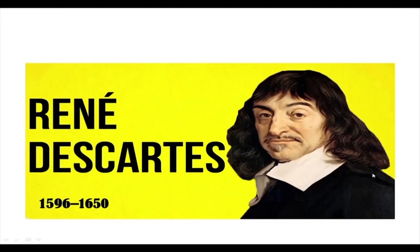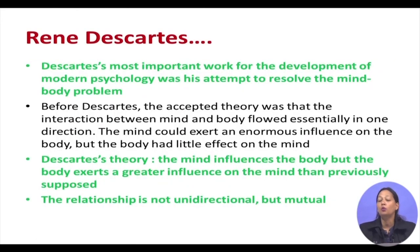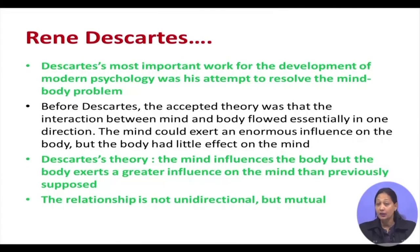Descartes' most important contribution to the development of modern psychology was his attempt to resolve the mind-body problem. Before Descartes, the accepted theory was that the interaction between mind and body was essentially one-directional — information passed from the mind to the body, and the body acted on it. The mind could exert enormous influence on the body, but the body had little effect on the mind. Descartes contradicted this, saying the mind influences the body but the body also exerts a greater influence on the mind than previously supposed — the relationship is a mutual, bidirectional interaction.